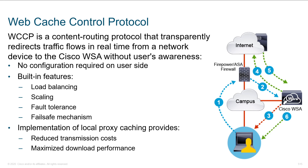Web cache control protocol is a content routing protocol that transparently redirects traffic flow in real time from a network device — intermediate, not from the client — without the user's awareness. The cool thing is no user configuration is required, and it's going to survive reinstallation of operating systems and changes to browsers. Some of the built-in features include load balancing, scalability, and fault tolerance.